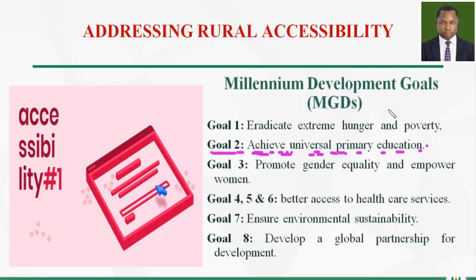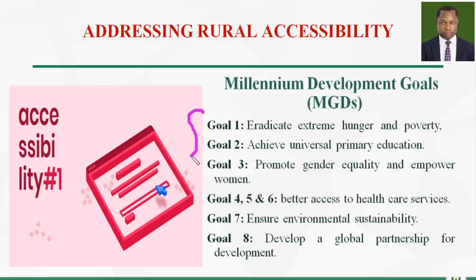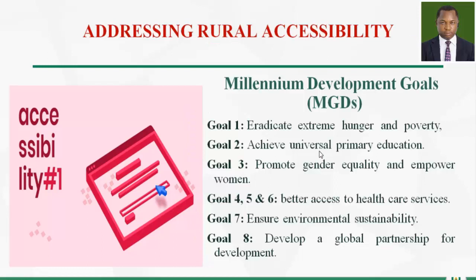Achieving universal primary education is also a good goal toward addressing accessibility, where good roads are constructed for people to access such institutions. Other goals include promoting gender equality and empowering women, improving access to healthcare services, ensuring environmental sustainability, and developing global partnerships for development. If all of these goals are addressed, there will be significant impact in solving the problem of rural accessibility.